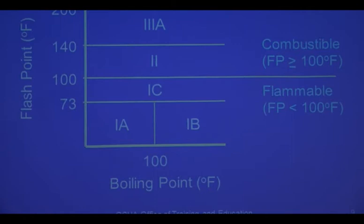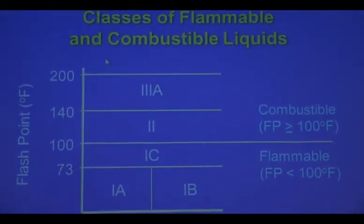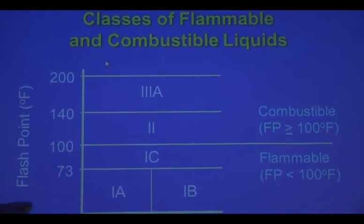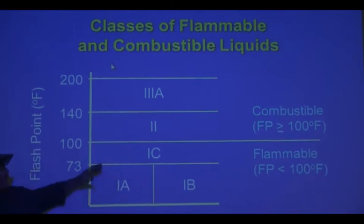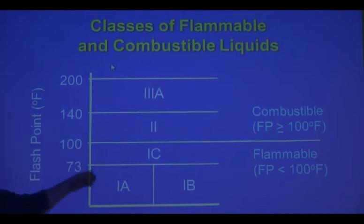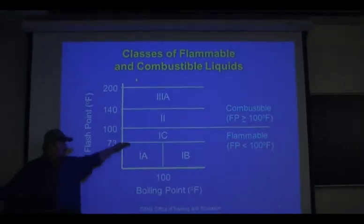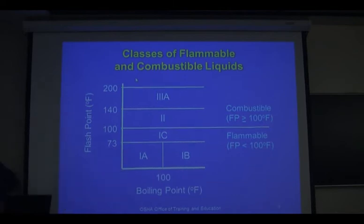This chart shows the different classes of combustible and flammable liquids: Class 1A, 1B, 1C, Class 2 and 3A. Notice they're all below 200 degrees Fahrenheit. Remember, the lower the flashpoint, the more dangerous it is — the greater the hazard. Class 1A is 73 degrees and below; Class 1B and 1C is 73 to 100 degrees; Class 2 and 3 are different. There's a brief description of them here.